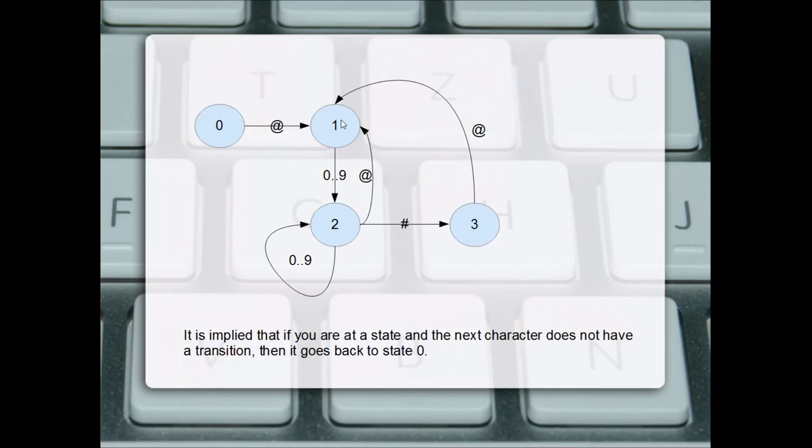In state one, if we get a digit, a zero to nine, we transition to state two. If in state two we get a zero to nine, we stay in state two. So it could be a two digit number or a three digit number or a 100 digit number.